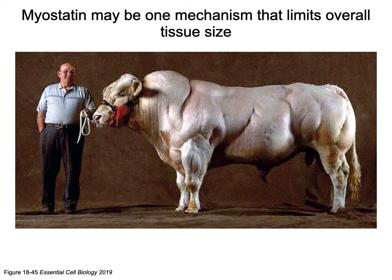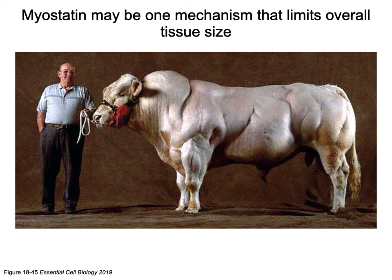Myostatin is a protein that inhibits myogenesis — the growth and differentiation of muscle cells. As an example, a cow with a myostatin mutation cannot turn off the signal to stop myogenesis, resulting in much larger muscle structures. These animals are sometimes referred to as double-muscled. This illustrates how if an inhibitory mechanism is turned off, it increases the overall tissue size present.